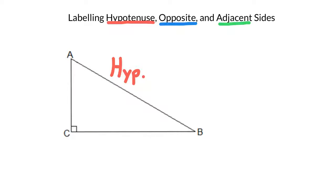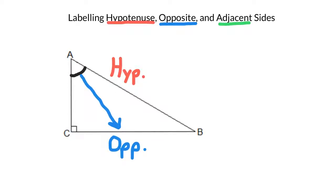So let's just say I'm referring to angle A. If that's my reference angle, directly across the triangle is my opposite side. And the side left over is my adjacent side.